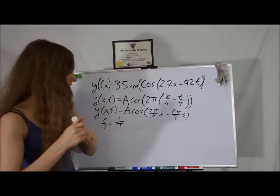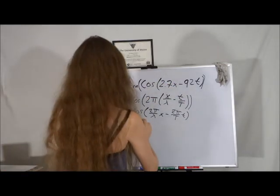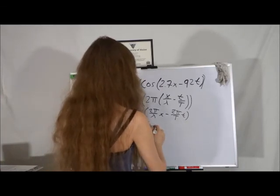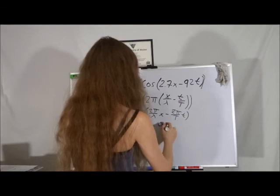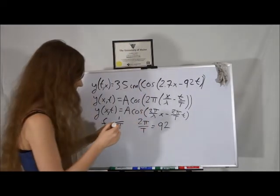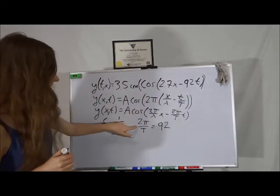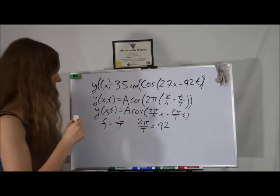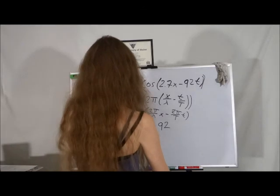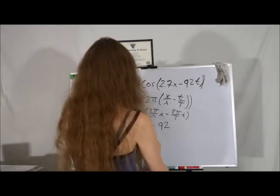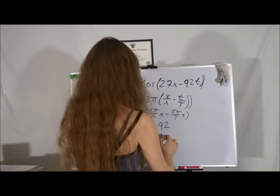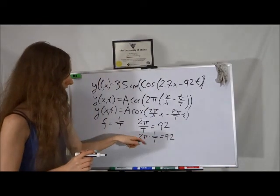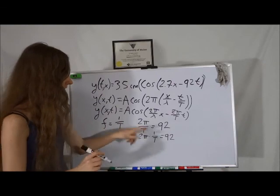So we know 2 pi over our period is equal to 92. Now, this is the same thing as 2 pi times 1 over our period. And 1 over our period is just our frequency, so this is 2 pi f.